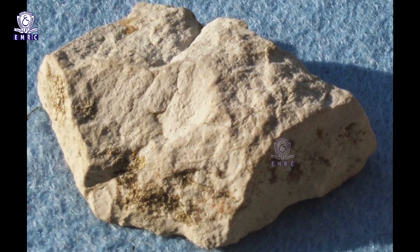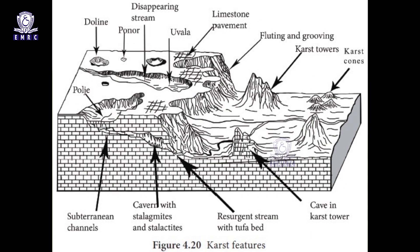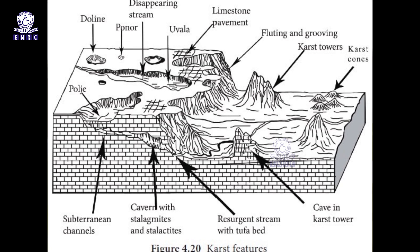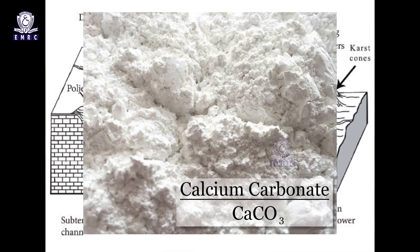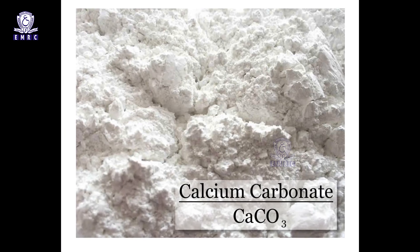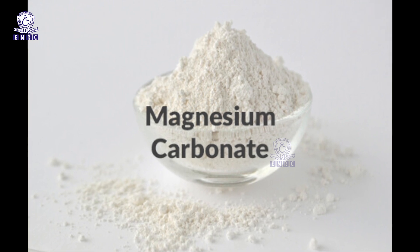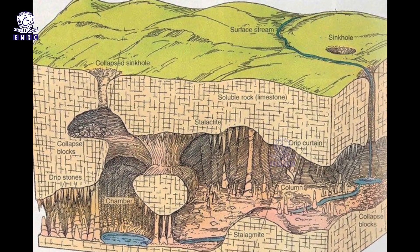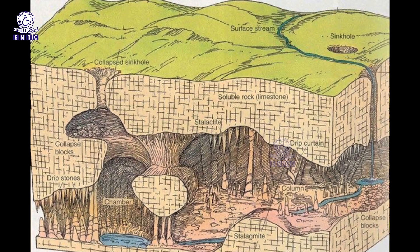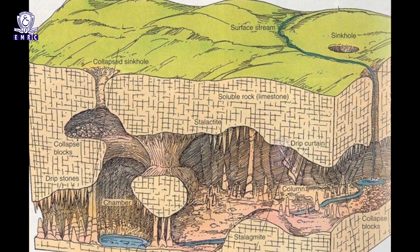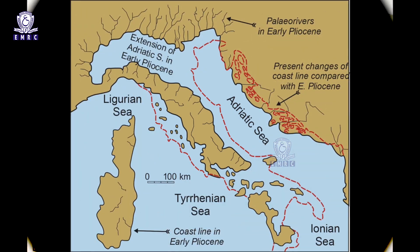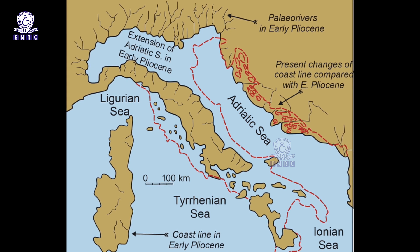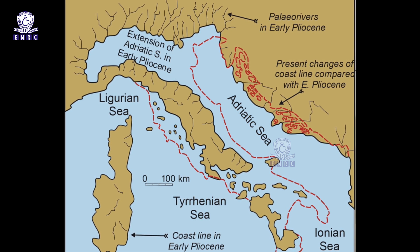The term karst is related to limestone. The basic question is: does the karst landscape evolve everywhere where there is a presence of underground water? Any limestone — that is calcium carbonate — and dolomite — that is magnesium carbonate — region showing the typical landforms produced by the action of underground water through the process of solution and deposition are called karst topography. Karst topography is typically developed in the karst region of Yugoslavia situated along the eastern margin of the Adriatic Sea.